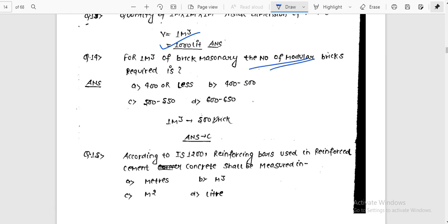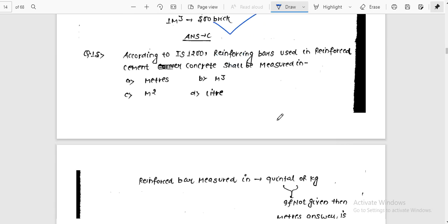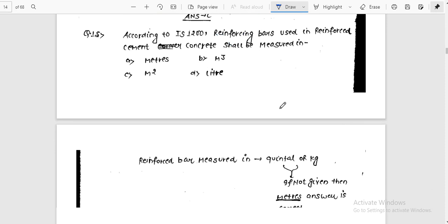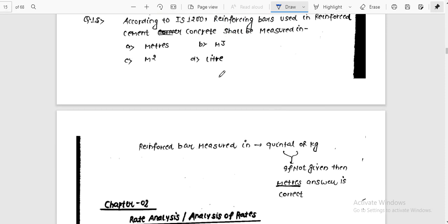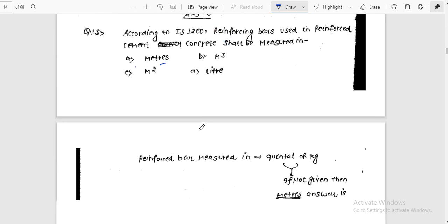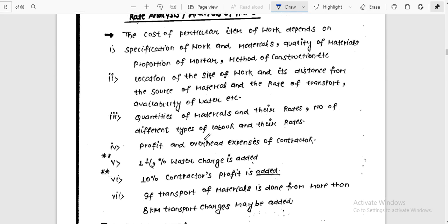According to IS 1200, reinforcement bars used in reinforced cement concrete shall be measured in quintals or kilograms, not in meters or running meters.